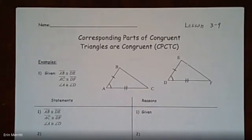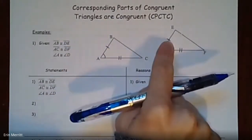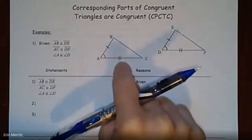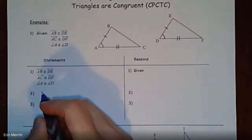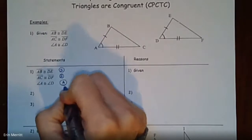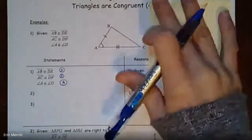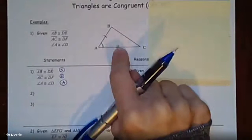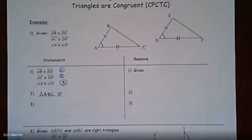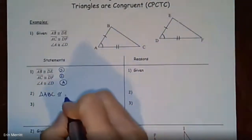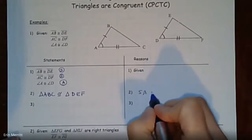The first example has three givens: AB is congruent to DE, AC is congruent to DF, and angle A is congruent to angle D — already marked for you. That's a pair of sides, a pair of sides, and a pair of angles. We list them in the order they appear in the diagram, not the proof. Looking at the diagram, we have side-angle-side, so triangle ABC is congruent to triangle DEF. Make sure the order of the letters matches all the parts.